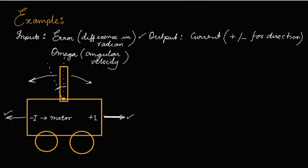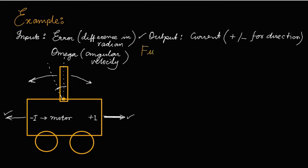Now we will see the fuzzification. For fuzzification, we will require membership functions for all of these: for error, for omega, and for current. Current would be required in defuzzification, but for the fuzzification process, error and omega would be required.